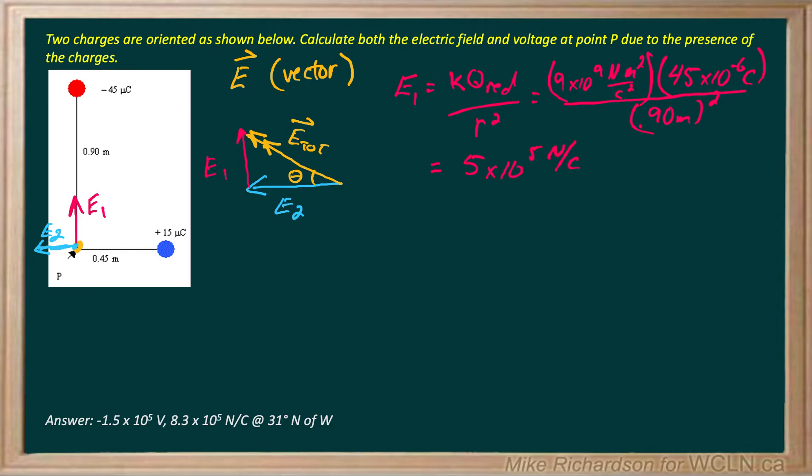Now similarly I can do E2, same equation: K and this time I'll do the blue one, Q blue all over r squared. K same value, I won't put the units in here just to keep this rolling along.